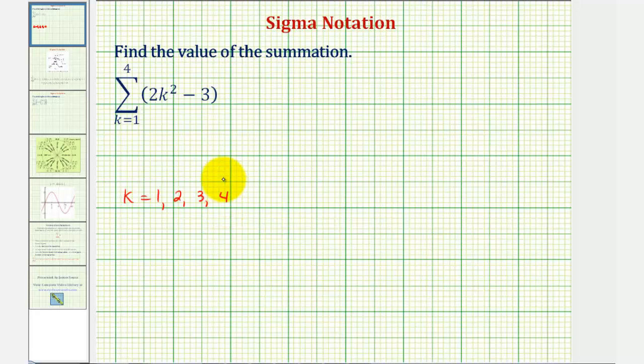So for each value of k, we'll get a value from this expression here called the summand, and then we'll find the sum of those values.